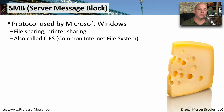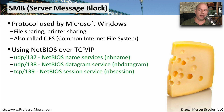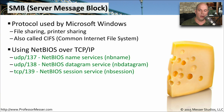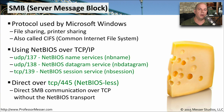To transfer files or to print in Microsoft Windows, we use a protocol called Server Message Block, or SMB — you might also hear this referred to as CIFS, or Common Internet File System. SMB can be sent using NetBIOS over TCP/IP: UDP port 137 is used for name services, UDP port 138 is for connectionless traffic between devices, and TCP port 139 is for the NetBIOS session over a connection-oriented protocol. You can also use TCP port 445 for direct SMB communication over TCP without needing NetBIOS.